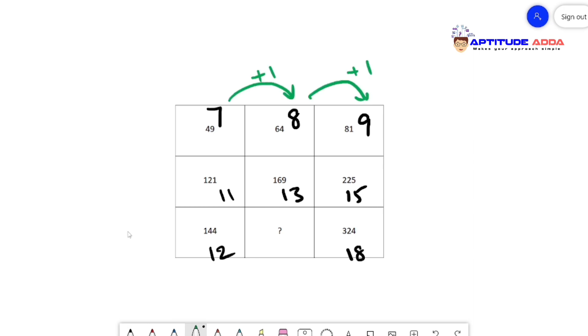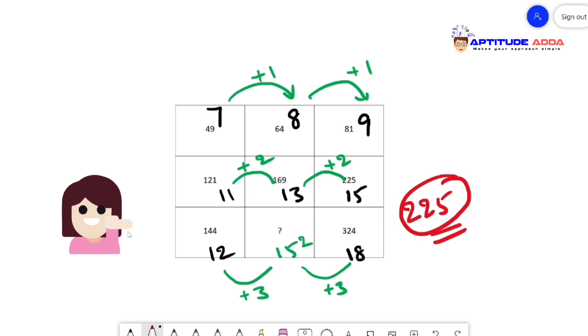Seven plus 1 gives you 8, 8 plus 1 gives you 9, 11 plus 2 is 13, plus 2. So my guess is it should be plus 3. Twelve plus 3 is 15, 15 plus 3 is 18. So it's very clear the question mark is 15 squared, which is 225.